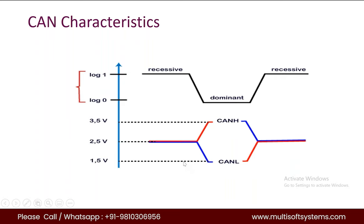If the bus reaches dominant or logic zero, it is impossible to move back to the recessive state. So the CAN characteristic is: logic one is the recessive state. To transmit one on the CAN bus, both CAN high and CAN low should be applied with 2.5 volts. If you want zero, that will be the dominant state.